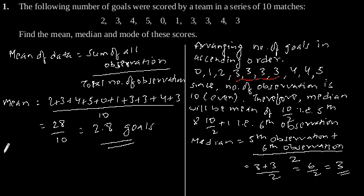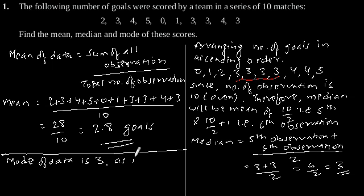So, the mode of data is 3, as it has maximum frequency of 4 in the data.